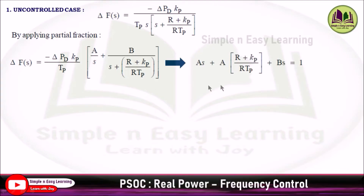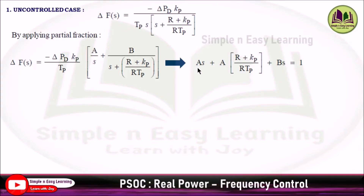Cross-multiplying gives A times S plus A times (R plus KP) divided by R times TP plus B times S equal to 1, after the denominator terms cancel. This is the expression for the partial fraction and now we equate the coefficients.